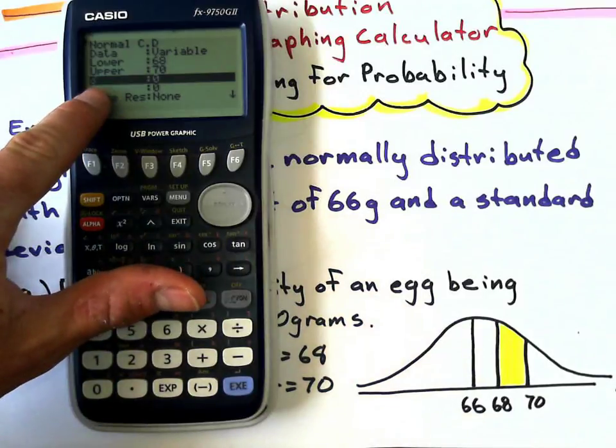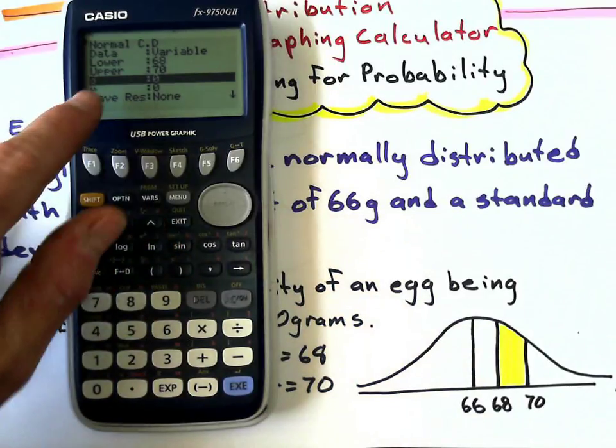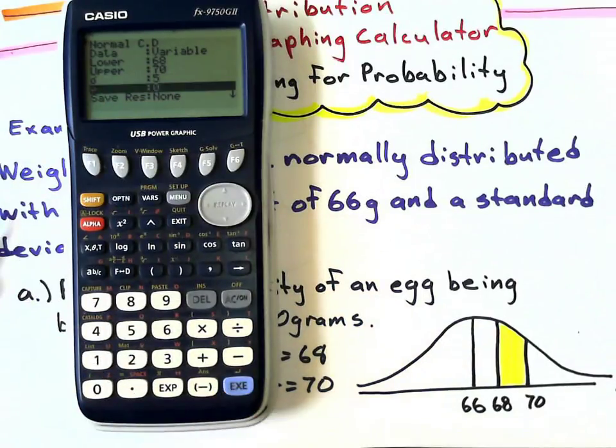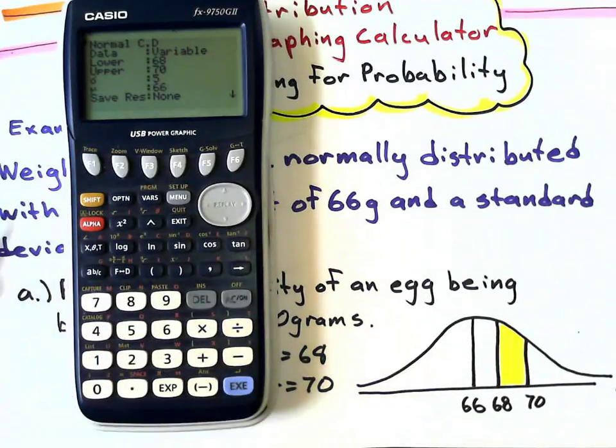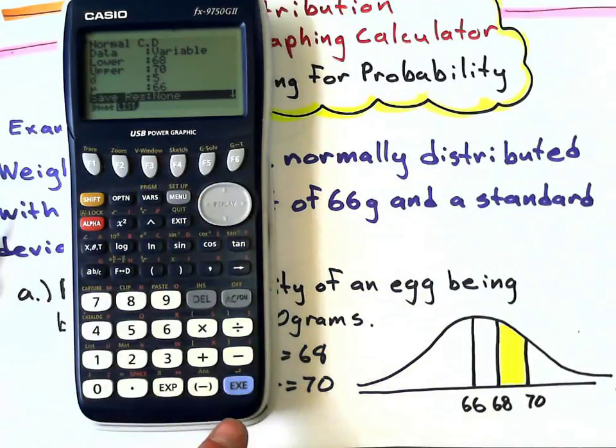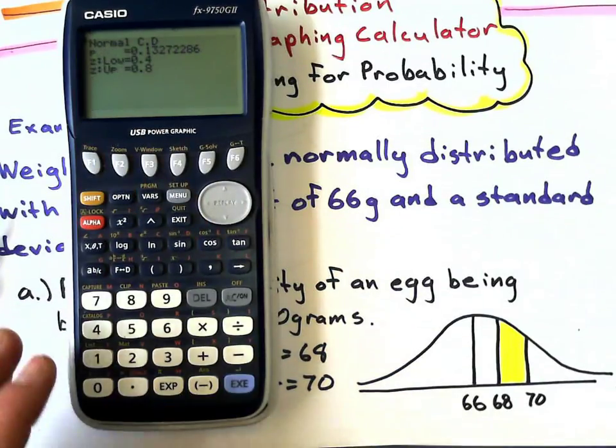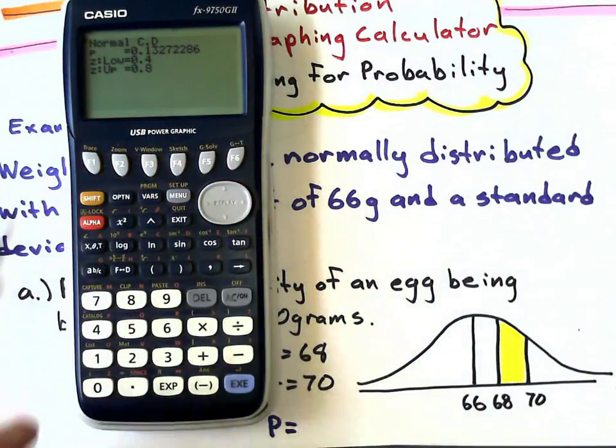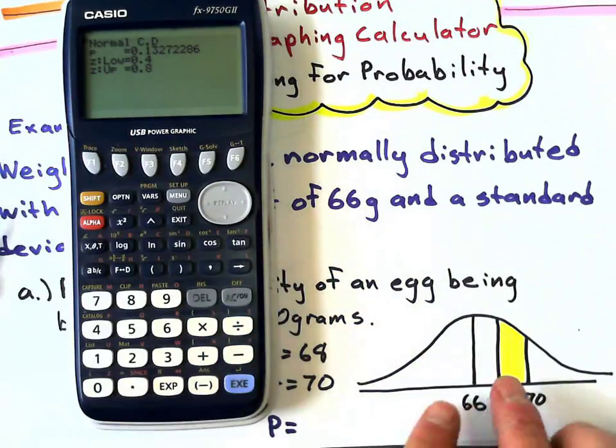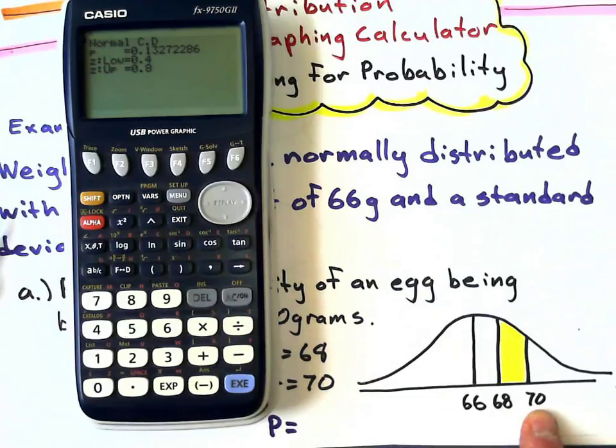Now I simply enter the data that I was talking about. My lower value is 68, so 68 for lower, execute. My upper value is 70, 70 execute. Sigma right there is my standard deviation, which was 5, execute. And mu, my mean, was 66, execute.